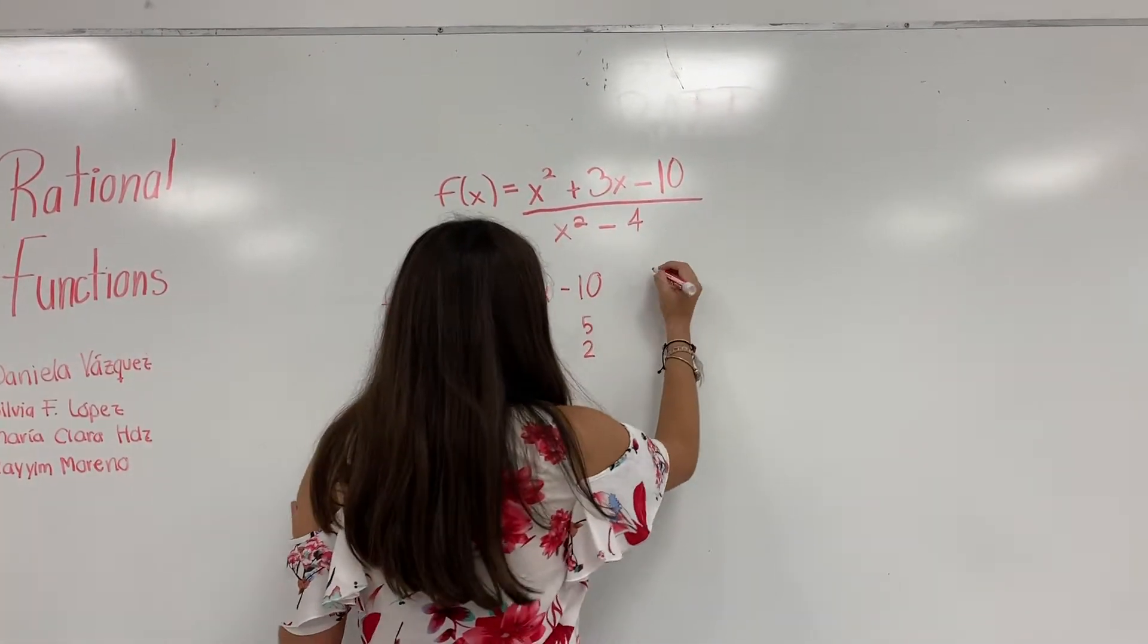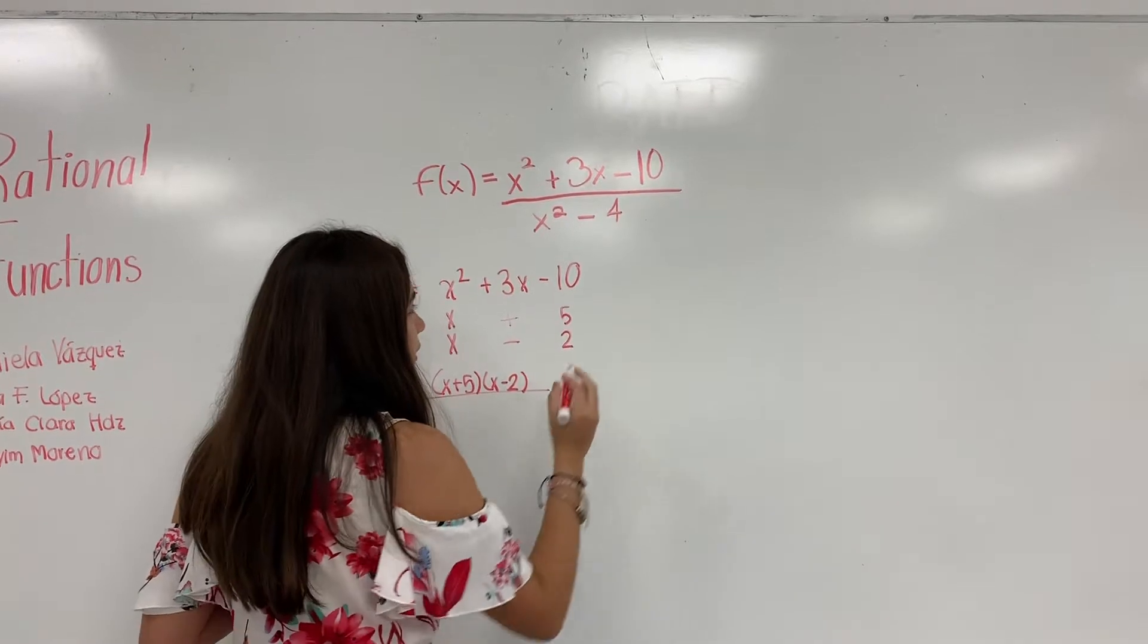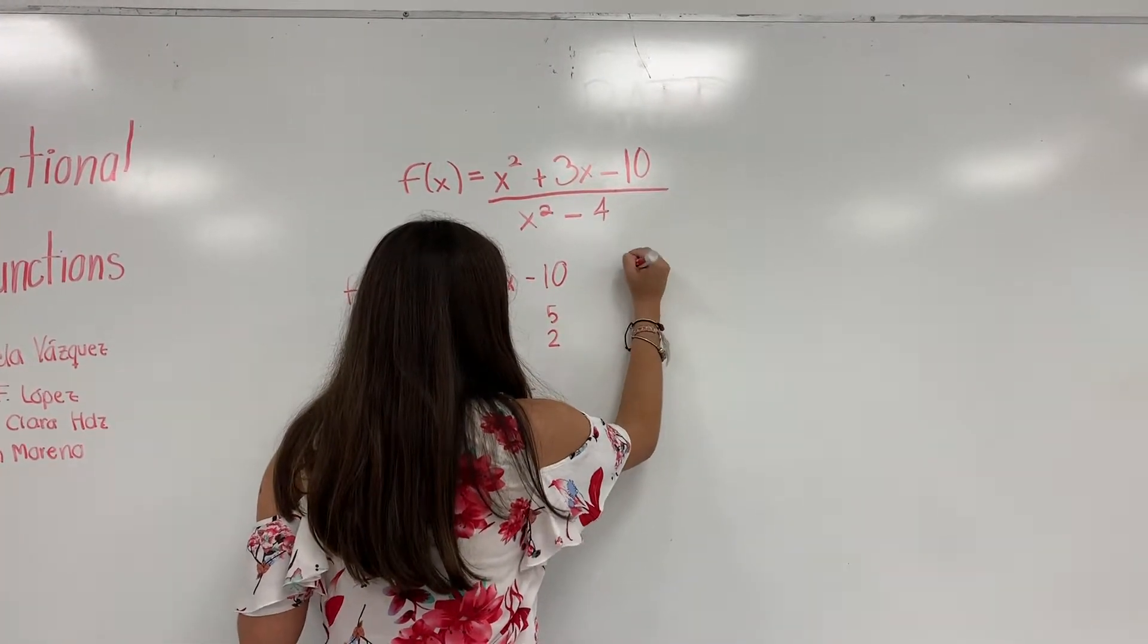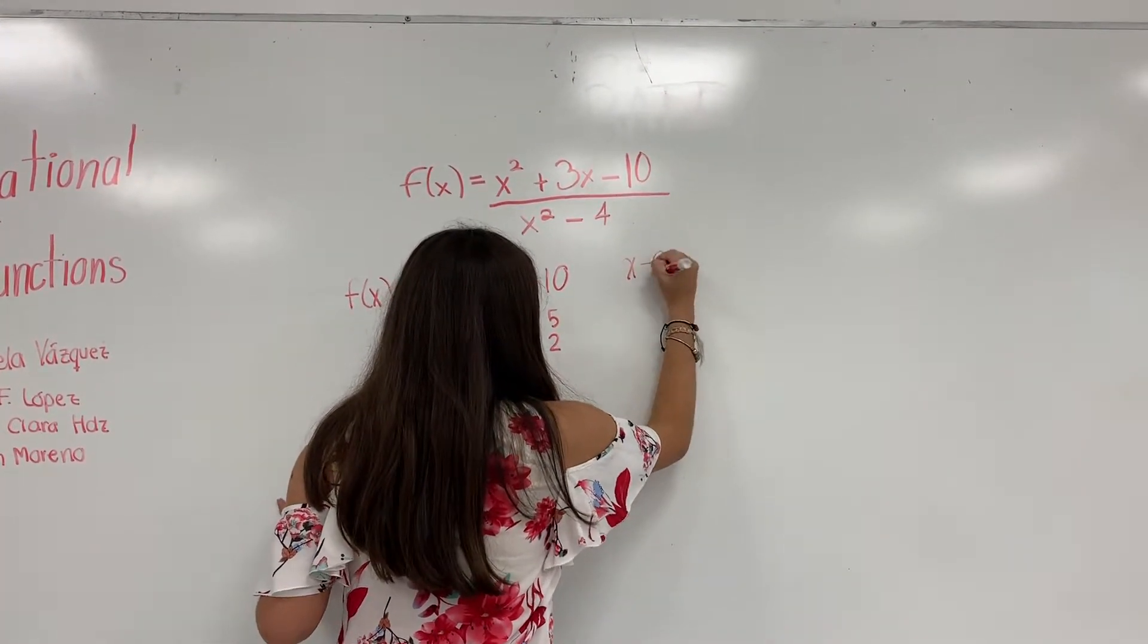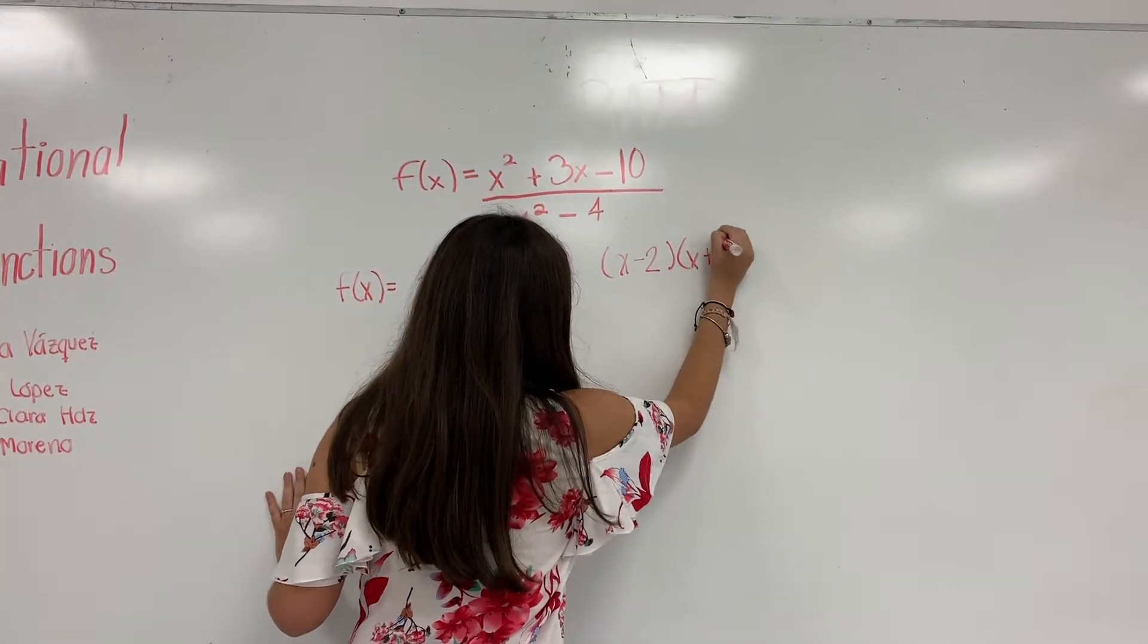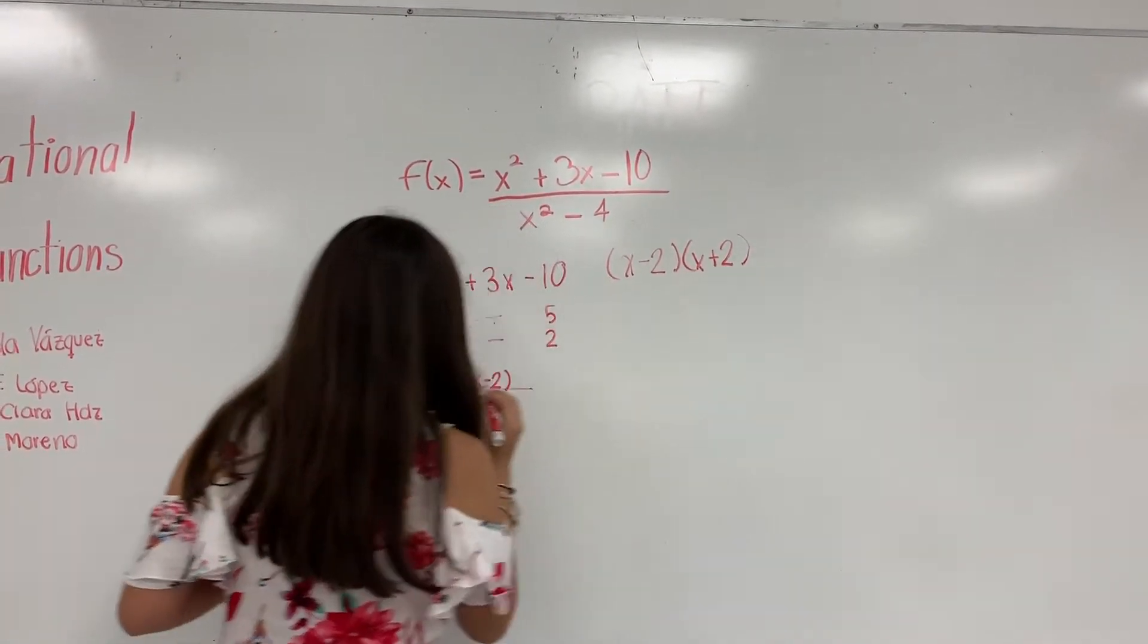Then for the bottom part, since it's a difference of squares, we already know that it's x minus 2 and x plus 2. These two will go in the denominator.